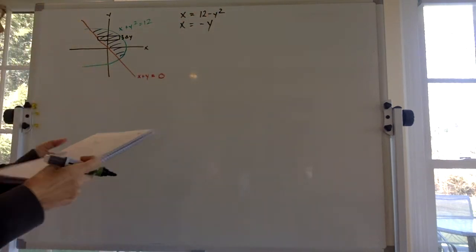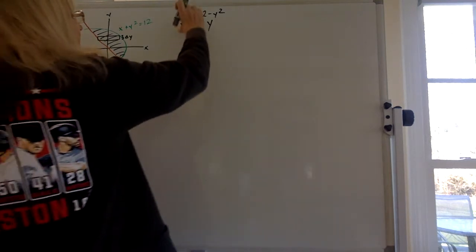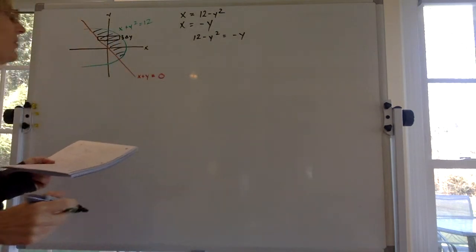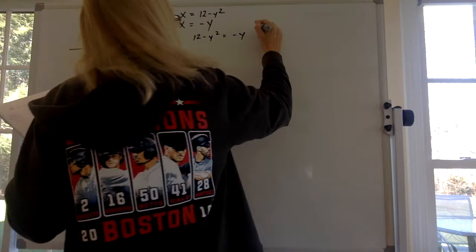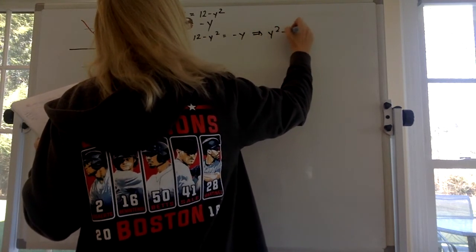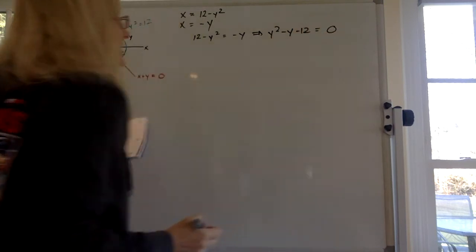So if we want to find the y values where these two things intersect we set the two x's equal to each other. So I just set those two equal to each other. So now I'm gonna move everything over to one side. I'm gonna add y squared to both sides and I'm gonna subtract 12 from both sides and I get 0.